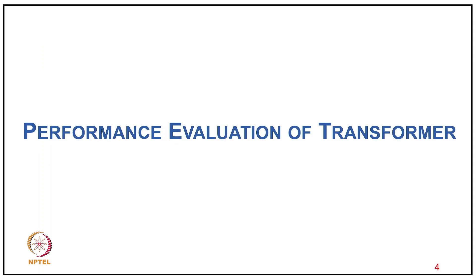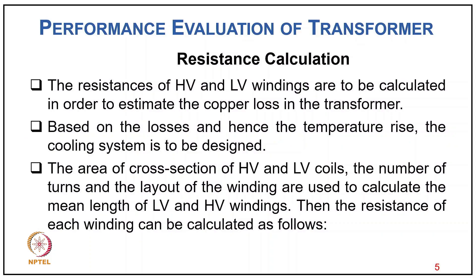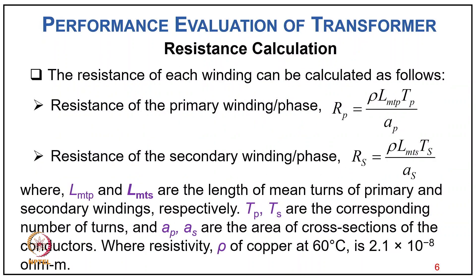Coming to the performance analysis of transformers, the resistance of high voltage and low voltage windings are to be calculated in order to estimate the copper loss in the transformer. Based on the losses, the temperature rise and the cooling system is to be designed. The cross-section area of HV and LV coils, number of turns, and layout of the windings are used to calculate the mean turn length, from which the resistance of each winding can be calculated.